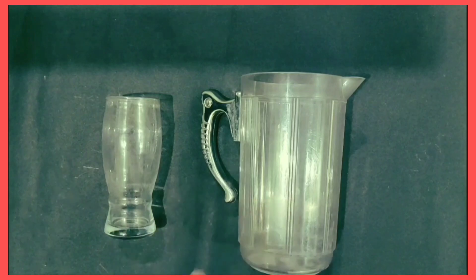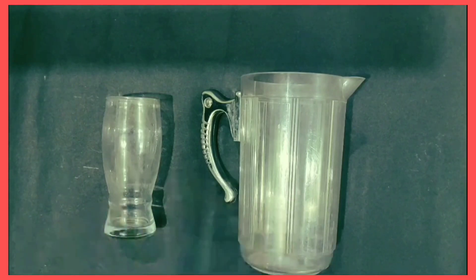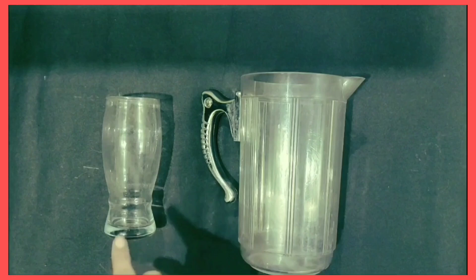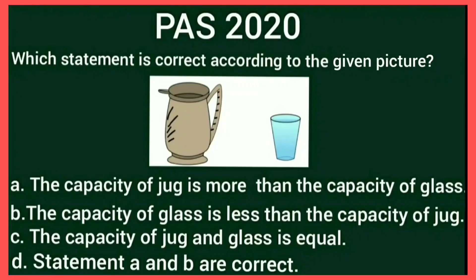This is a glass and this is a jug. The jug holds more liquid than the glass. So the capacity of the jug is more than the capacity of the glass. Both option A and option B are correct. Therefore, option D is the right answer, and we put a tick on option D.